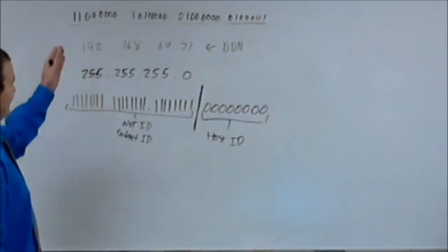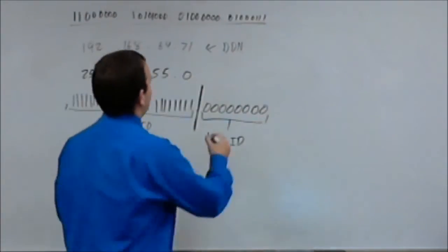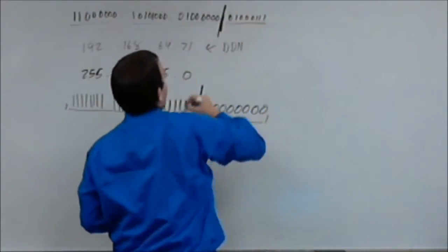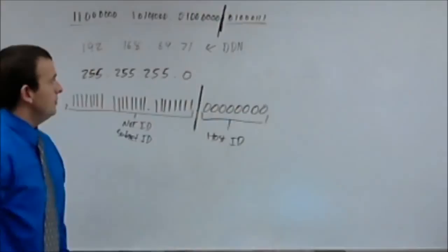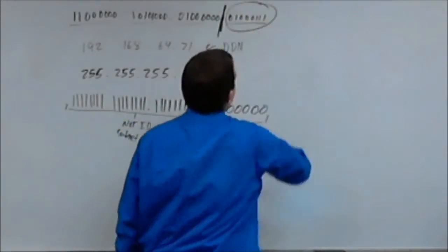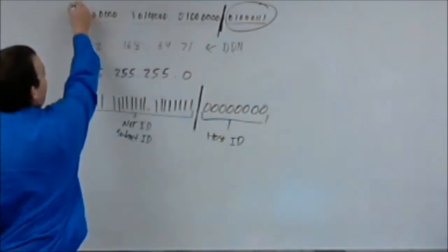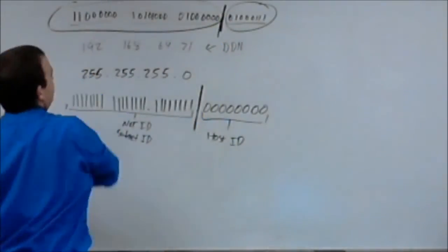So, in this network address, you're actually going to see that you're going to get that line drawn right here as well. Meaning that this octet defines the host and this set of octets defines the network.